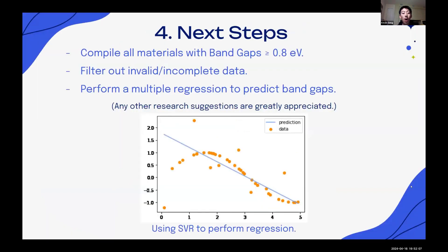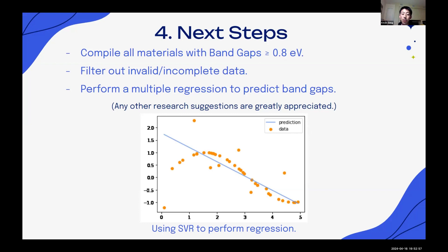For next steps, we want to compile all materials with band gaps greater than or equal to 0.8 eV, which is essentially in the semiconductor and insulator range. We also want to filter out invalid or incomplete data, most notably data containing null values, since that is useless to any machine learning model and increases complexity. We then want to perform a multiple regression using the given features and band gaps to predict band gaps of new materials — for instance, using SVR, or support vector regression. Any other research suggestions or directions, since our project is just starting, are greatly appreciated.